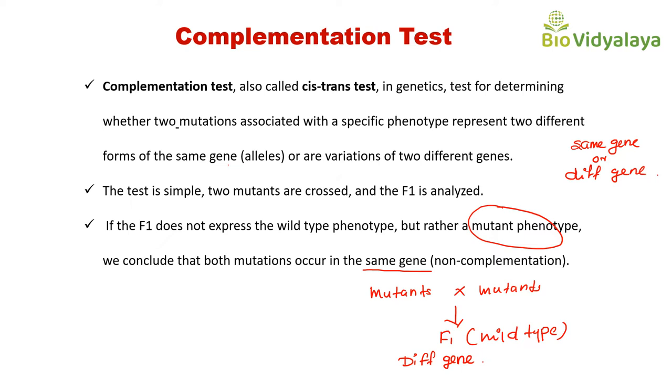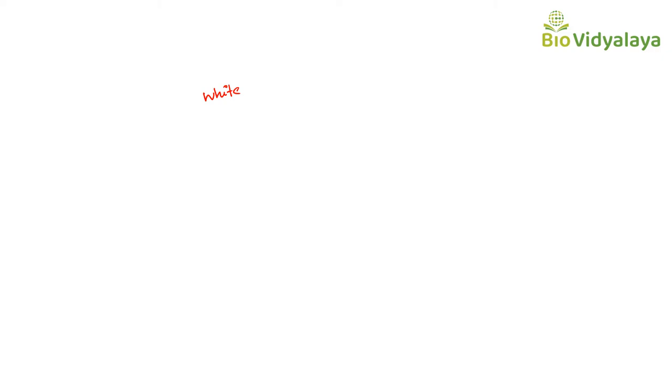Let me explain with one example. Consider a mutant phenotype: white eye color in Drosophila. Here we are mating two strains with mutant phenotype — white eye color Drosophila. Both strains show white eye; both are mutant. We are checking whether the mutations causing white eye are present in the same gene or different genes.